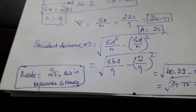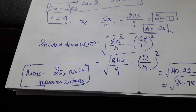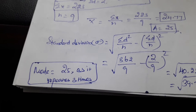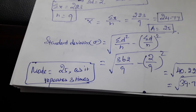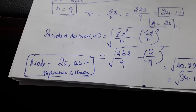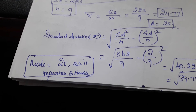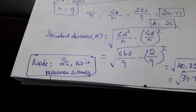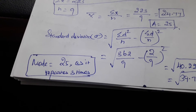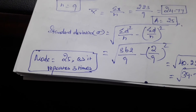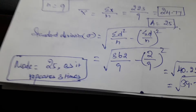Now we need to find the mode. By looking at the data we can easily find the mode, because 25 appears three times — so it is the mode.